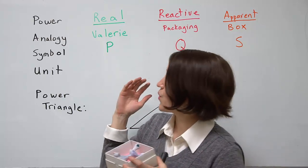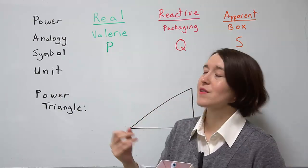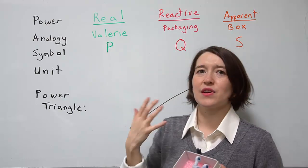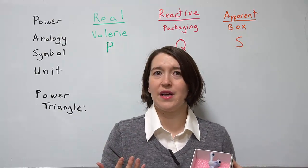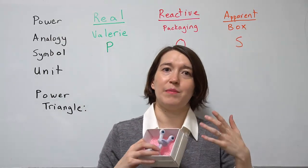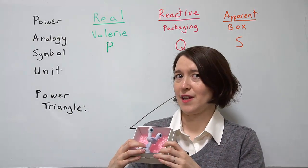The power comes in three different parts: the part that we want, which is the real part; the packaging, which is the necessary part that we need to actually send the power; and the apparent power, which is the potential power that we could send.